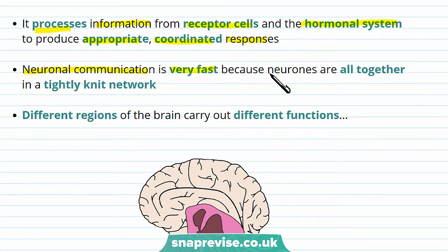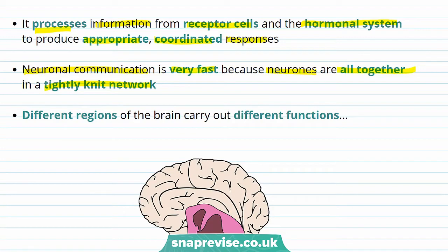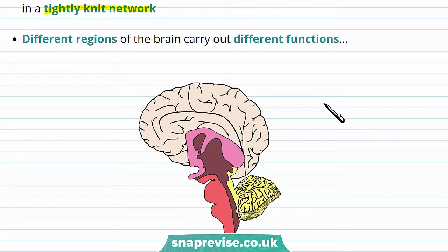Neuronal communication through nerves is very fast, and this is because neurons are all together in a tightly knit network. This is why your brain can process information really fast.